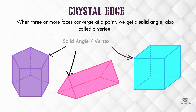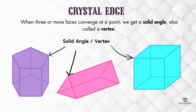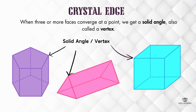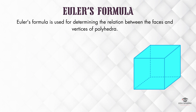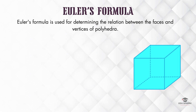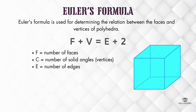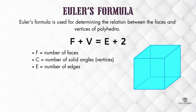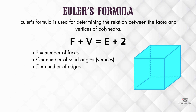Finally, let's explore the corners. When three or more faces converge at a point, we get a solid angle, which is also called a vertex. Here's where things get interesting. There's a formula that connects the number of faces, solid angles, and edges in a crystal. It's called Euler's formula, and written f plus v equals a plus 2, where f is the number of faces, v the number of vertices, and a the number of edges.